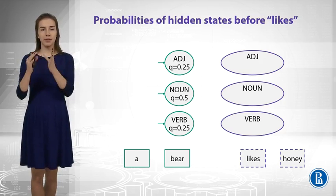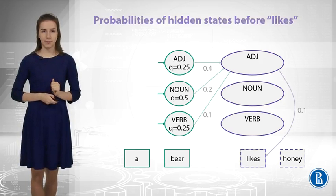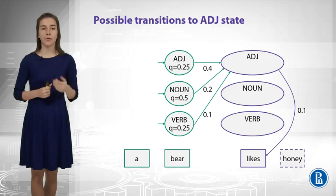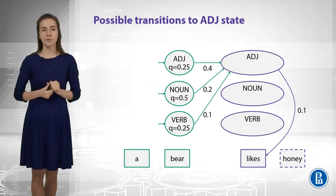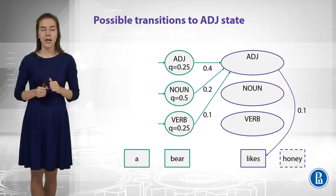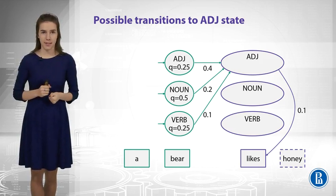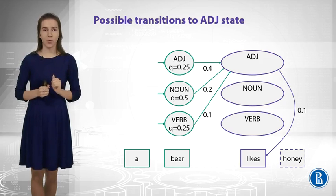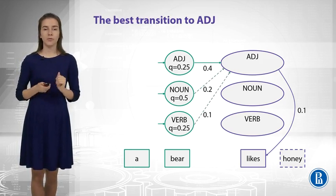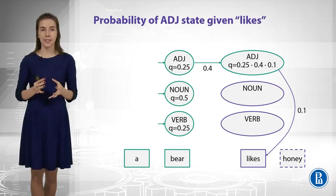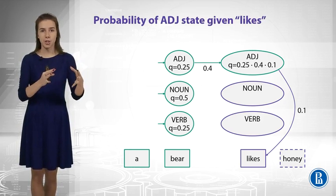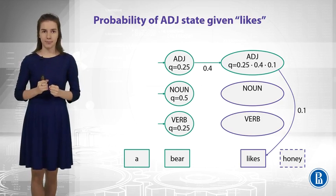For the first state, for adjective state, we can try to go from different previous states, and we have transition probabilities, different transition probabilities for each of them, and we have also the output probabilities to generate 'likes' in this case. Now, we need to find maximum, so we need to find the best way, and in this case it would be this one. So, we find this way, and we say that the probability is now composed by three things: the previous probability that we had so far, the transition probability, and the output probability.